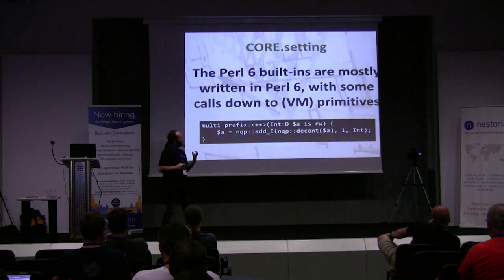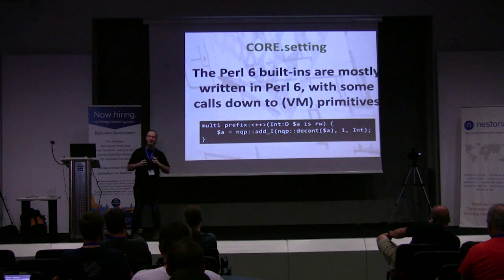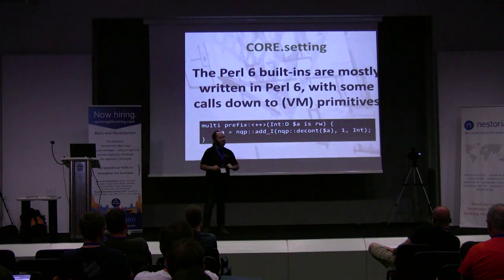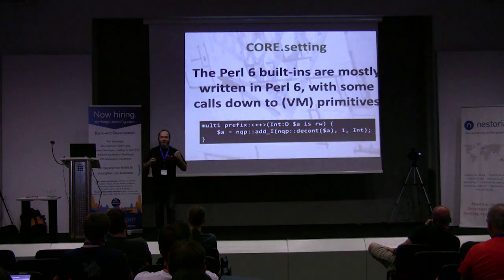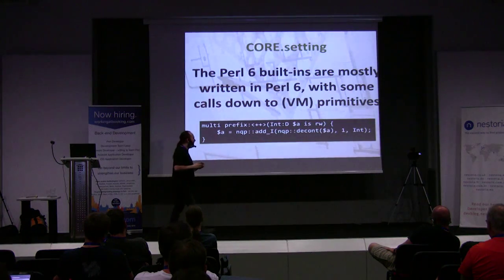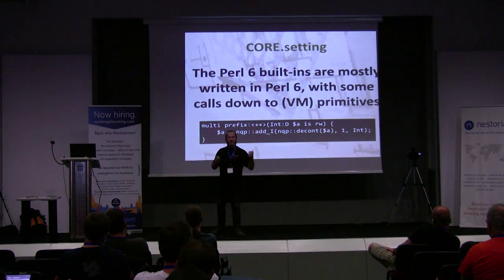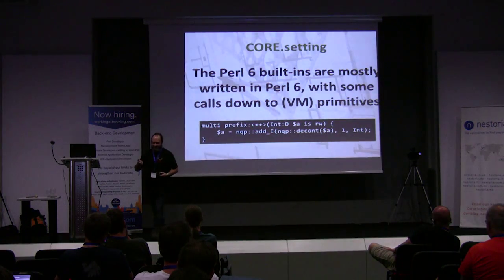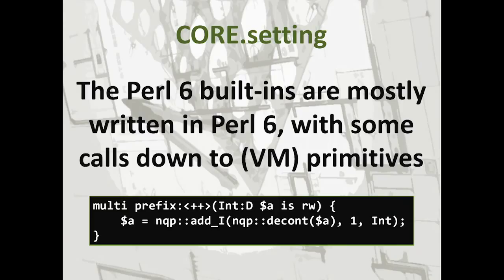There are two other pieces of infrastructure I want to talk about briefly. One is what we call the core setting — this is where all the Perl 6 built-ins go, and the cool thing about it is it's written in Perl 6. Someone asked me over dinner last night what Perl 6 is written in, and the answer, in large degree for the built-ins, is: Perl 6. This is the prefix ++ operator — that's what it looks like in Perl 6 code. It looks a little bit funky because it's got this NQP double-colon thingy, which is a call down to a low-level primitive operation — in this case, the one that adds a big integer to another big integer.